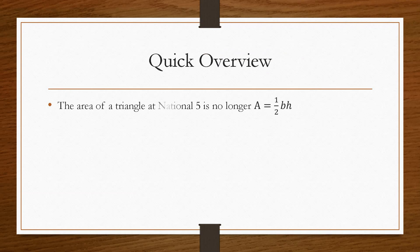Now if we take a quick overview, the area of a triangle at National 5 is no longer the formula A equals a half times the breadth times the height.